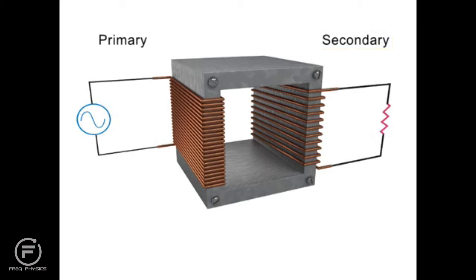The two coils are well insulated from each other and do not form a physical electrical connection. This gives a transformer its unique electricity altering properties.